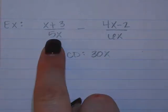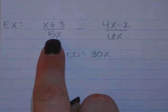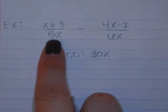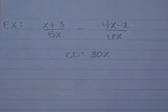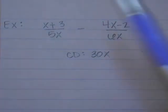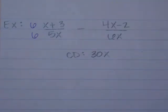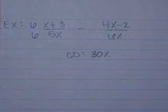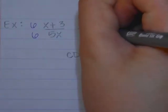The first fraction has 5x — what does it need? A 6. It needs a 6, that's how it will become 30. The second fraction has a 6x — what does it need? 5, that's how it's going to become 30.